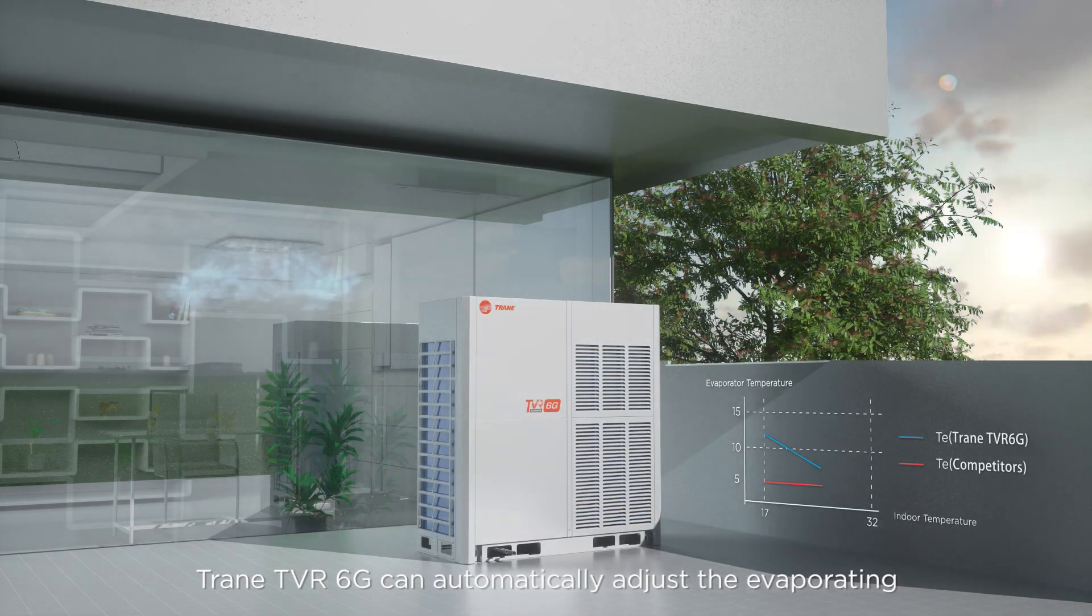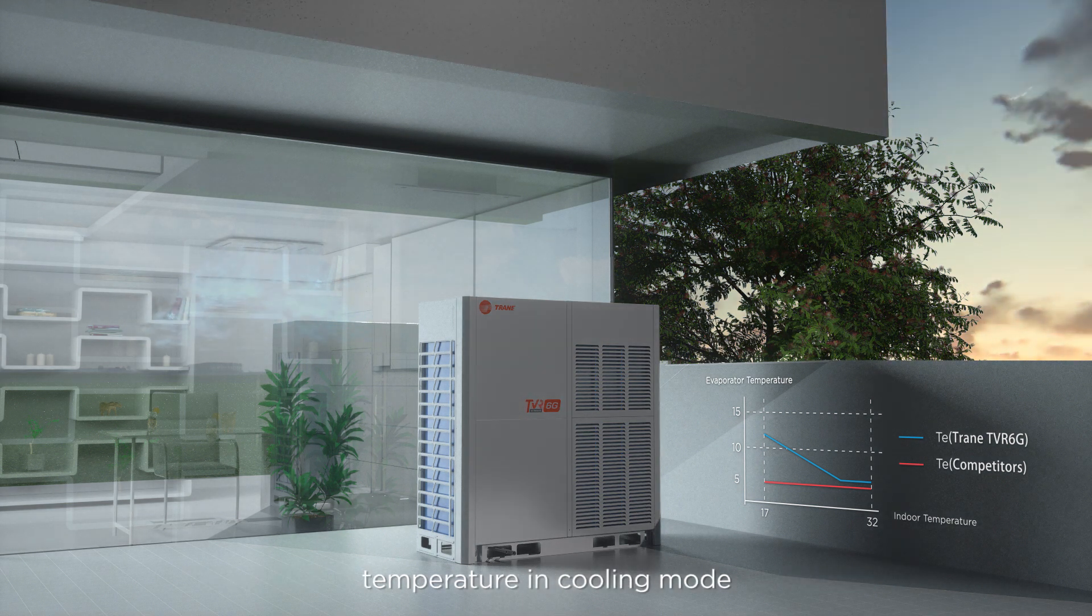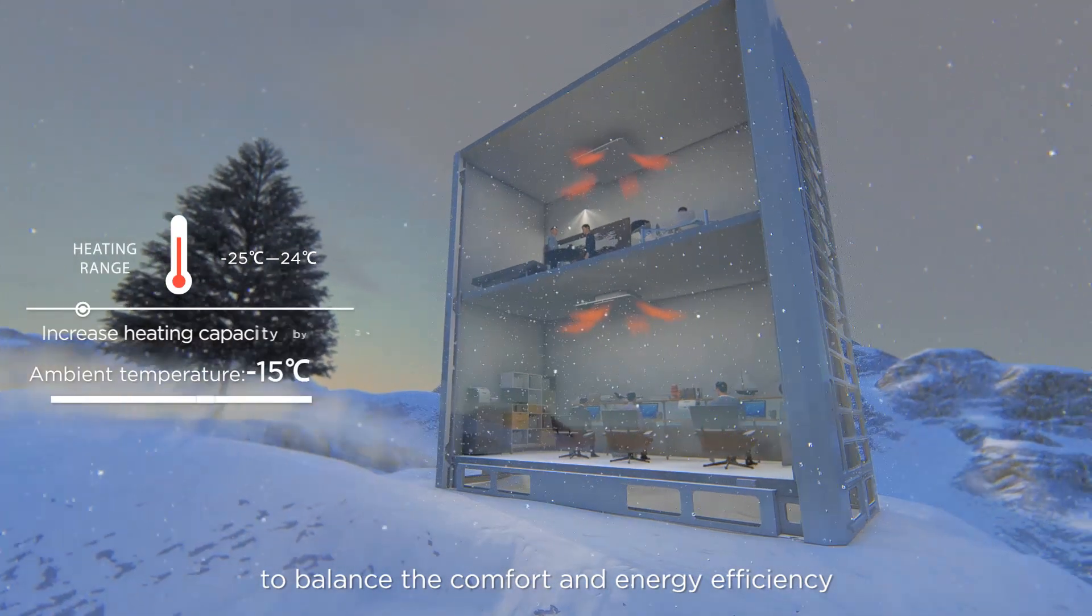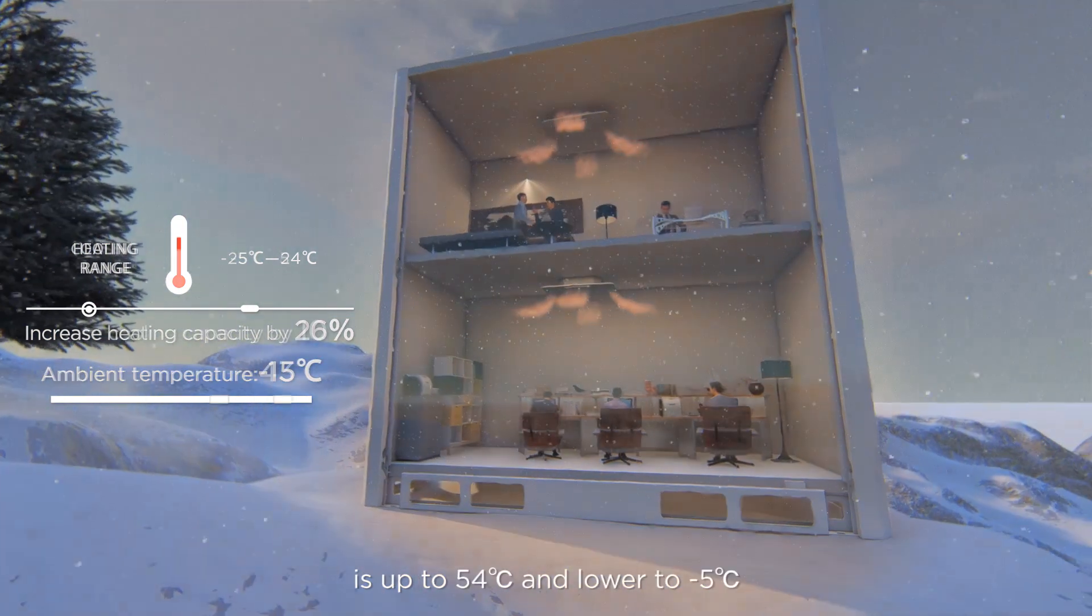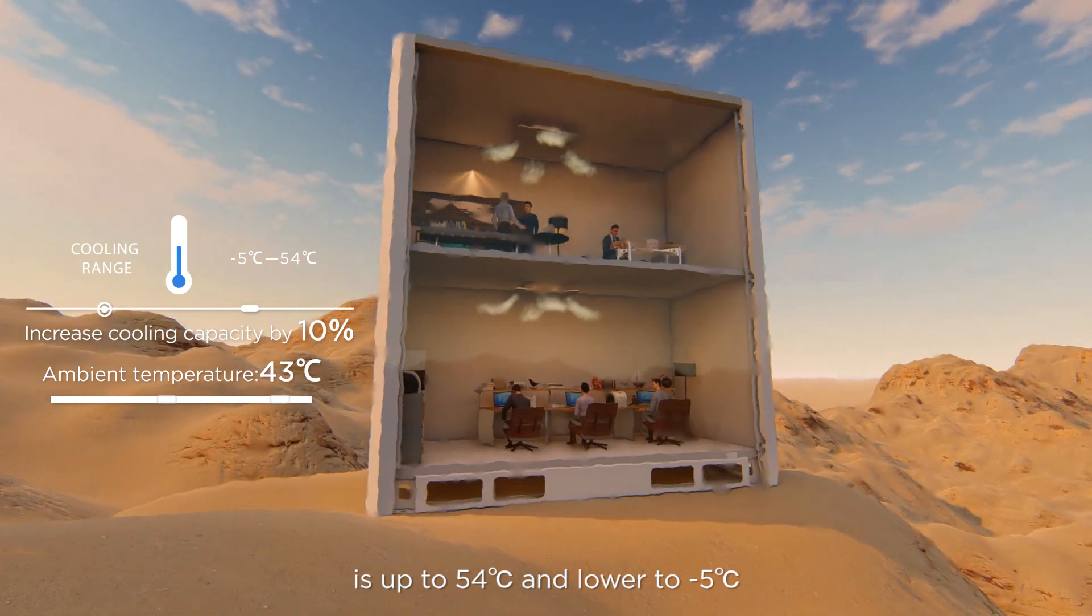TrainTVR 6G can automatically adjust the evaporating temperature in cooling mode and condensing temperature in heating mode to balance the comfort and energy efficiency. It can stably operate when the ambient temperature is up to 54 degrees Celsius and lower to minus 5 degrees Celsius.